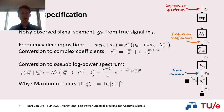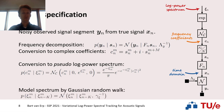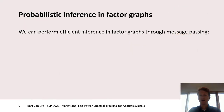So in our current model, we have now modeled our time domain signal y(n) all the way to its frequency coefficients and its log power spectrum. To finish the model and perform variational log power spectral tracking, we will model this spectrum using a Gaussian random walk with step size k.